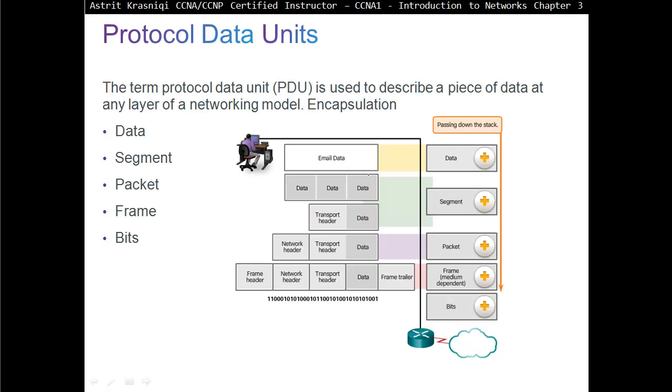Then the transport layer, we call it a segment. So as you can see here, for example, so first here we have just a data. At the transport layer, we take one data and we just split it in small pieces. And that is called the segment. Now each piece is going to have a transport header.